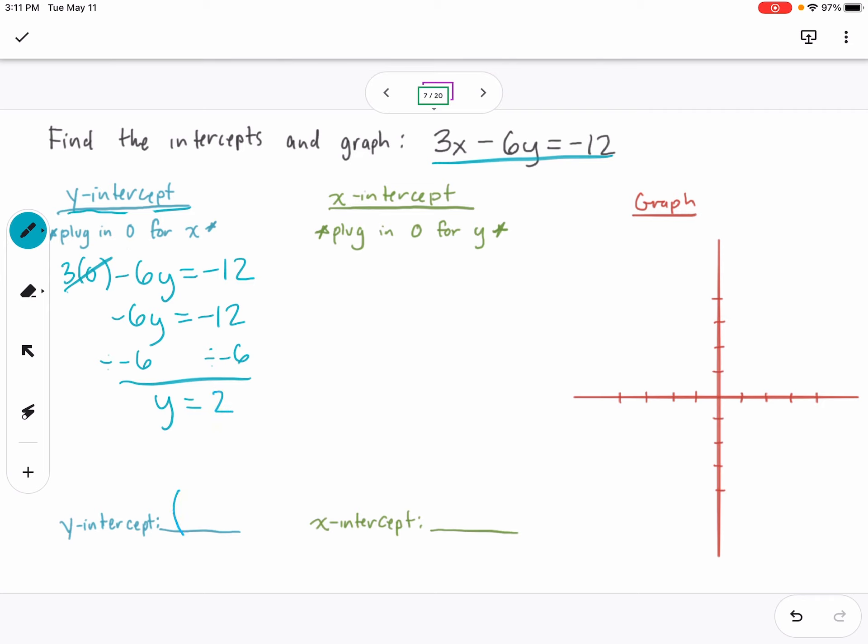So my y-intercept is the point (0,2). Points are always written as x comma y, so my x value is 0 and my y value is 2.